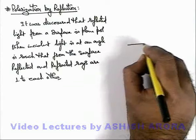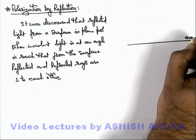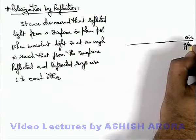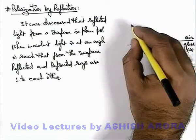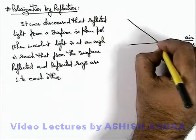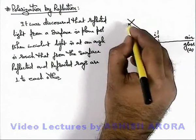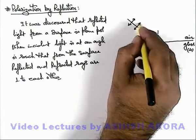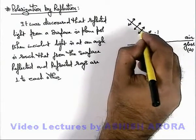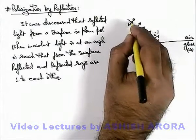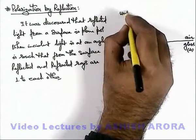Here we can see we are given a surface with air on one side and glass on the other, where the refractive index of glass is μ. Ordinary light is incident onto it at an angle of incidence i. This ordinary light has all electric field directions along the plane of paper as well as perpendicular to the plane of paper, which is unpolarized light.